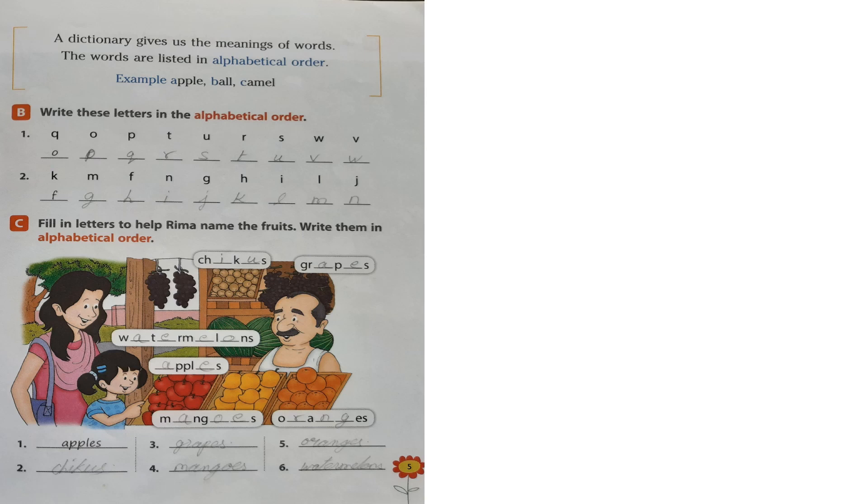Now let us arrange this in alphabetical order. Yes, which will come first? Apples. Next, Chikus, Grapes, Mangoes, Oranges, Watermelons.